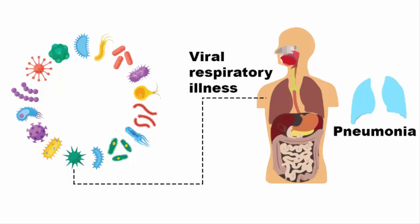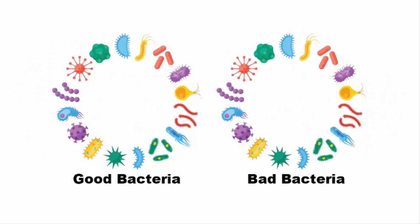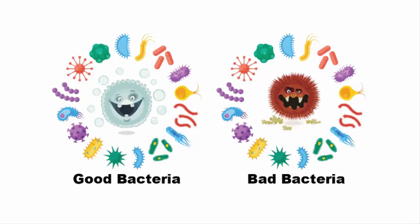The human body consists of millions of tiny living organisms, which all together are called bacteria, archae, protists, fungi, and viruses. Bacteria are microbes that are found on the skin, in the nose, mouth, and especially in the gut. We acquire these bacteria during birth and the first years of life, and they live with us throughout our lives. There are good bacteria and bad bacteria. Good bacteria help our body digest food, absorb nutrients, produce several vitamins in the intestine, and even protect us from dangerous diseases.